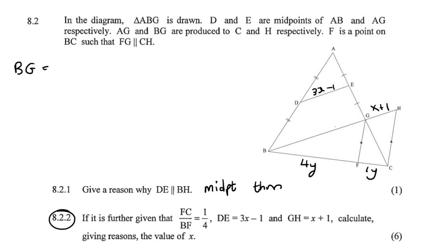Okay, so I'm going to go straight to BG is going to be 2 times the length of DE, and that's just because of midpoint theorem. So BG is then going to be 2 times 3X minus 1, which is going to give us 6X minus 2.